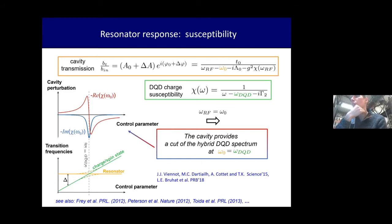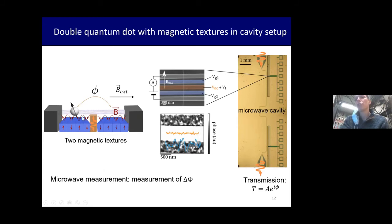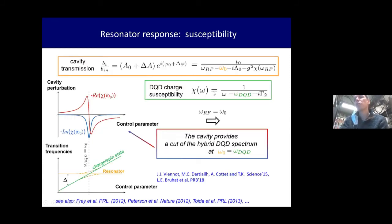To be more specific: from a linear response argument, the microwave cavity transmission close to resonance directly reads out the charge susceptibility of the system. In our case — a double quantum dot — we read out the double quantum dot charge susceptibility. The real part of the charge susceptibility gives a dispersive effect that shifts the cavity frequency, while the imaginary part changes the damping.